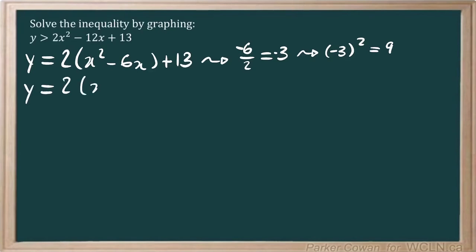So we have 2 times x squared minus 6x plus 9 minus 9 plus 13. The next thing we want to do is we're going to want to take that negative 9 out of the brackets here. So in order to do that, we just multiply this 2 into the 9 and we can move it outside.